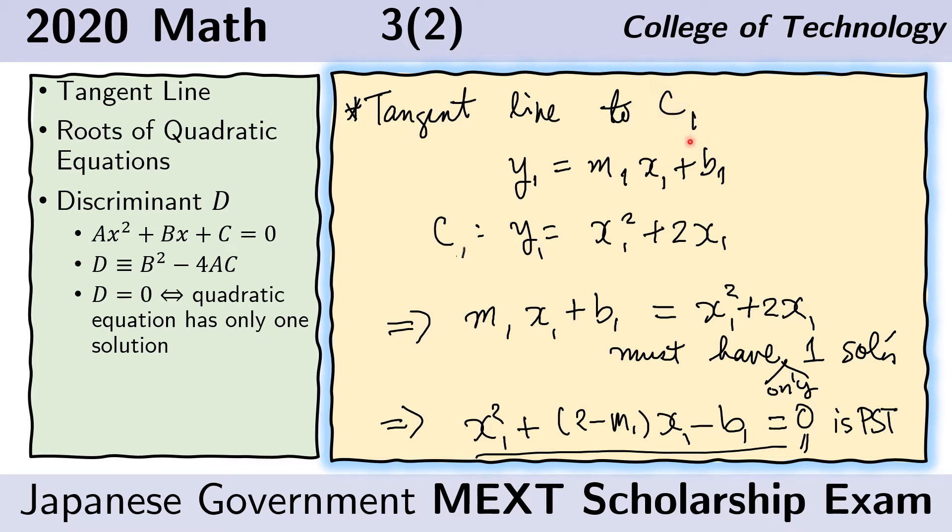First, let us find the tangent line to C sub 1. In general, the equation of a line is given by y equals mx plus b. Here, the subscript 1 is used to indicate that this line is tangent to the curve C sub 1. The curve C sub 1 is given by y equals x squared plus 2x. Therefore, to find the point of tangency, we make sure that the y's are equal and the x's are equal of both the tangent line and the curve. And so here we equate the y's for the first equation here.